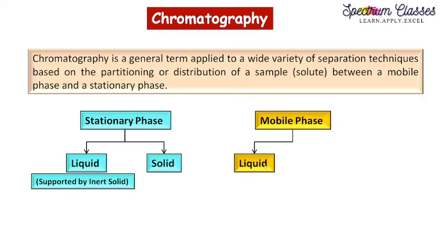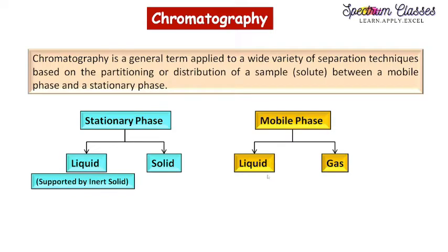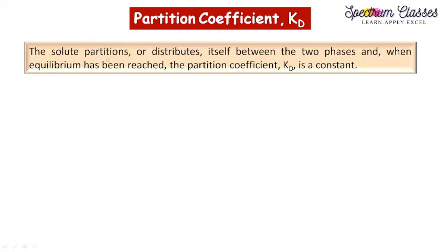The mobile phase can be of two types: liquid or gas. Therefore, chromatography may be defined as a method of separating a mixture into its components through equilibrium distribution of each solute between solid and liquid phases. This can be understood by considering the partition coefficient — the solute partitions or distributes itself between two phases, and when equilibrium is reached, the partition coefficient Kd is a constant.